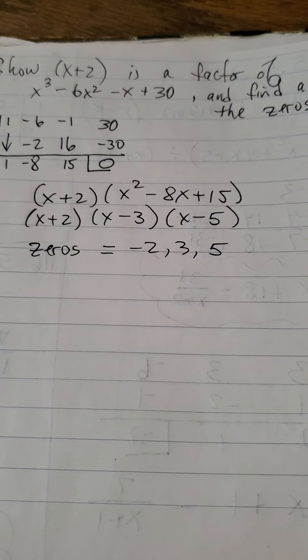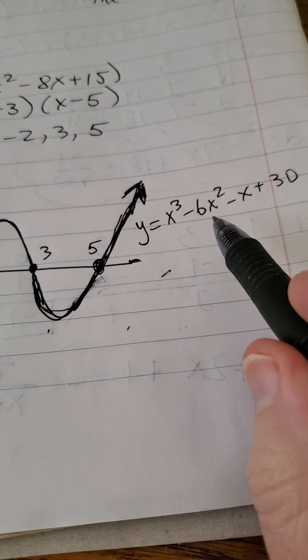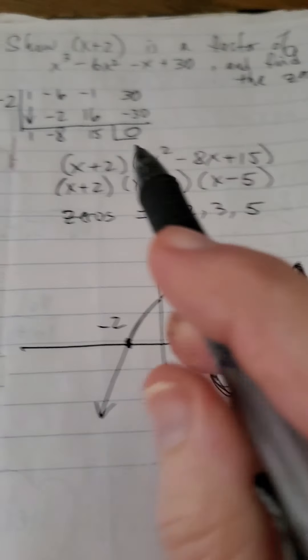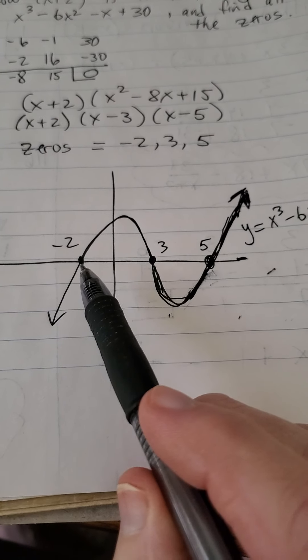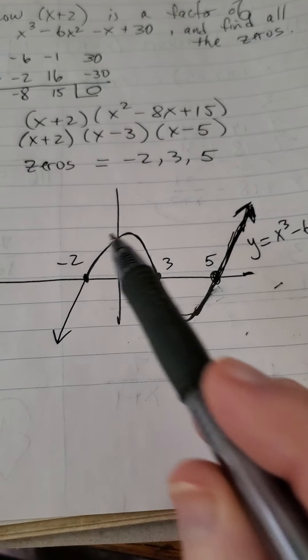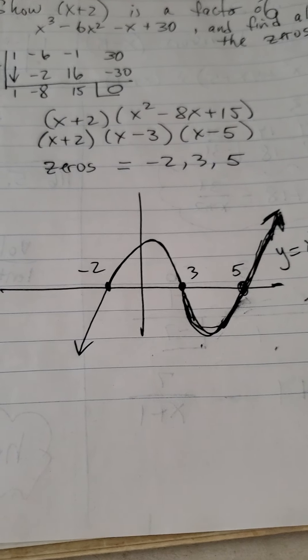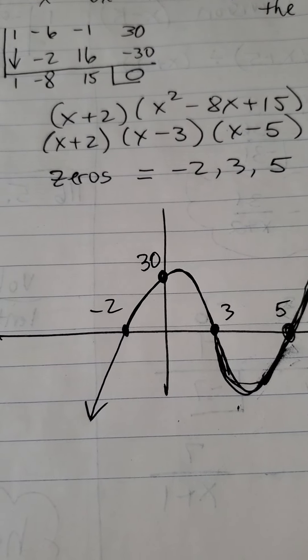Which means also, if I would graph this function, meaning if I were to graph y equals x cubed minus 6x squared minus x plus 30, which is our original polynomial, this would be the graph. It would hit the x-axis at negative 2, positive 3, and positive 5. Where would it hit the y-axis? Pause the video and think about that for a second and tell me the answer. That's right. It would hit the y-axis at 30.